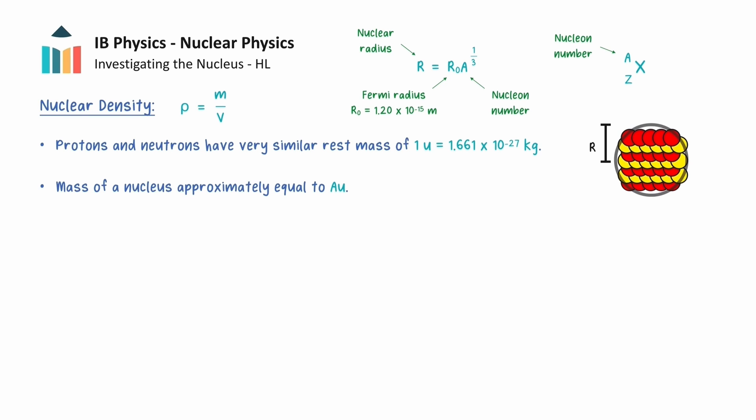For the volume, we can assume that the nucleus is spherical and so the volume of a sphere is given by this formula in the data booklet. These expressions for mass and volume can now be substituted into the formula for density. Moreover, we can substitute the expression above for the nuclear radius, and then we find that the nucleon number A cancels out in the numerator and denominator.